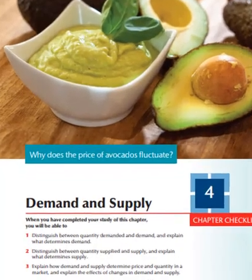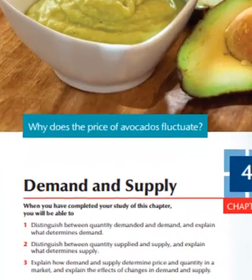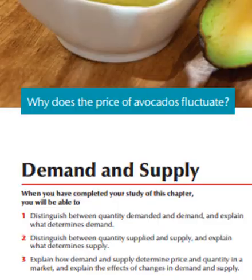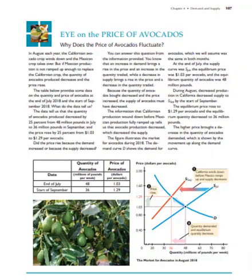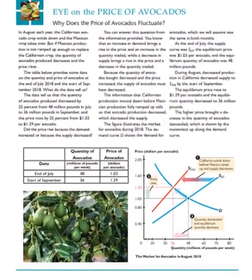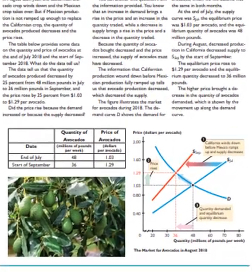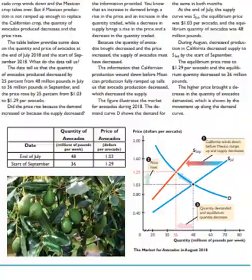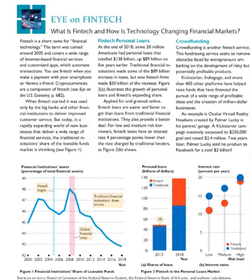Each chapter opens with a question, which is answered in an ION Boxed feature that helps students to see the economics behind the key issue facing the world and highlights a major aspect of the chapter story. ION Boxes offer fresh new examples to help students see that economics is everywhere.